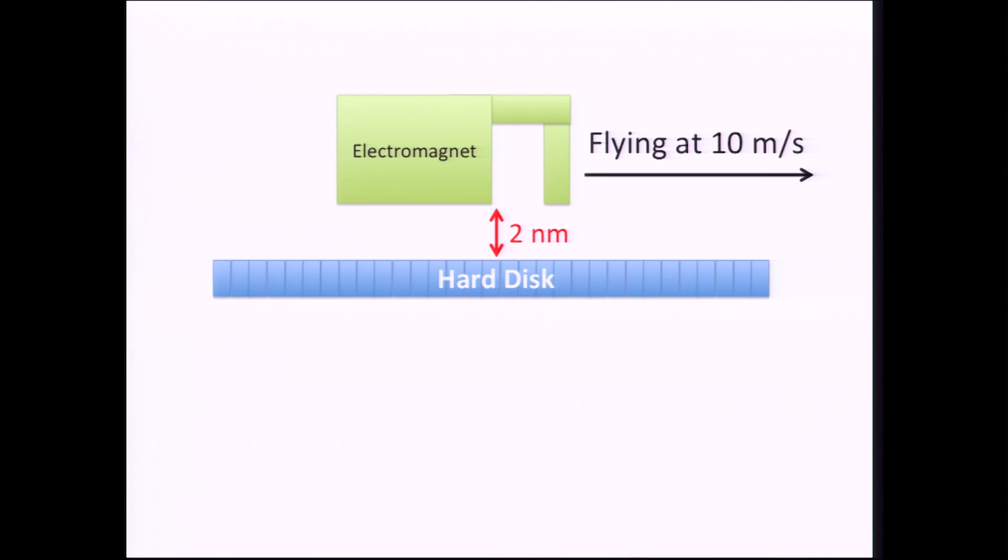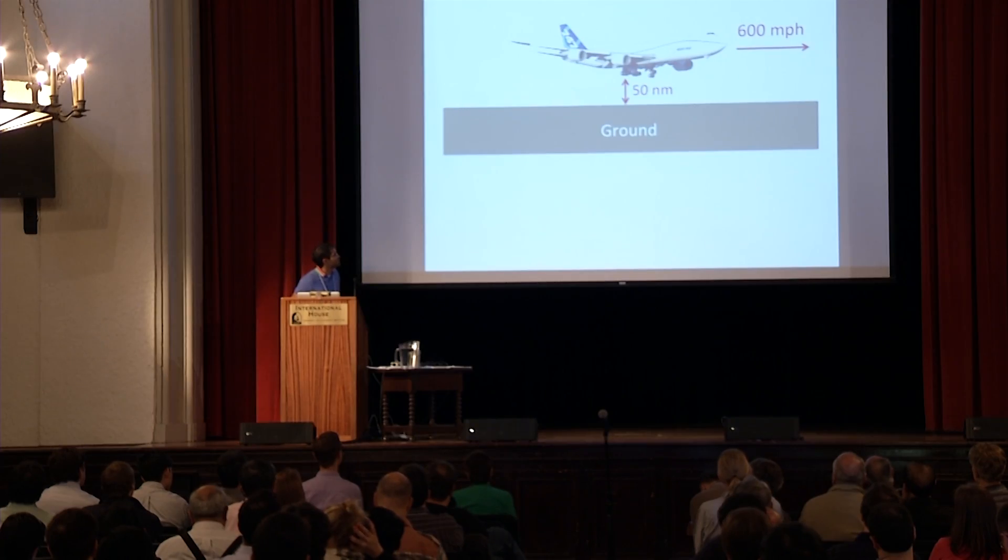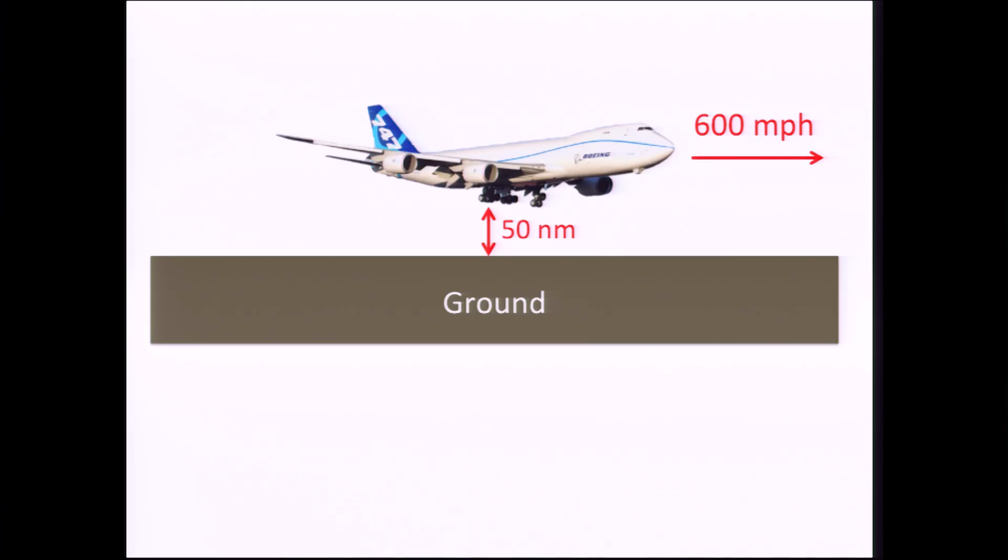It's really amazing how far we've gone mechanically just in order to access all the information on a hard drive. To give you an idea, the hard drive is moving at about 10 meters per second. And the electromagnet is basically flying above the hard drive. In reality, the electromagnet is actually mounted on a wing. So it literally is flying above. And it's hovering at a very small distance, at 2 nanometers above the hard drive. It's a very mechanically stable system. To give you an idea what that is in real life, that's equivalent to engineering a 747 that can fly at full speed, 600 miles per hour, and hovering exactly 50 nanometers above the ground. That's like the amount of mechanical stability that exists in today's hard drives.